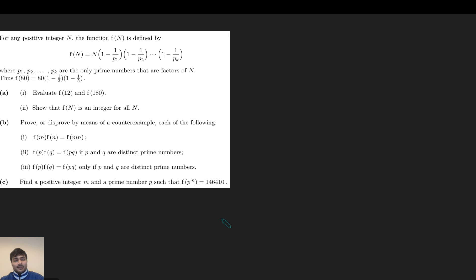Part A, part 1: evaluate f(12) and f(180), and then we want to show that f(n) is an integer for all n. So f(12) is going to be 12 times (1 minus 1/2)(1 minus 1/3), which is the primes that divide 12. Not too difficult to evaluate this, it just turns out to be 4.